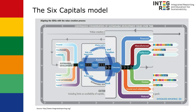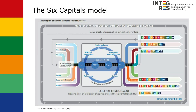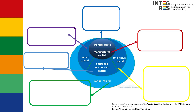For example, a company could make financial profits, which is a positive impact on the financial capital. This is the information that has always been published in the financial annual report. However, because of the production process, the company could have a negative impact on the natural capital, because the company uses water in the production process and emits carbon emissions during its business activities. In this model, there is also a connection with the 17 Sustainable Development Goals. By using this framework, a company can also communicate their impact on the SDGs.